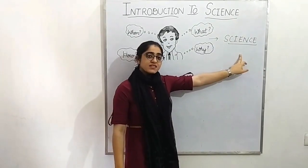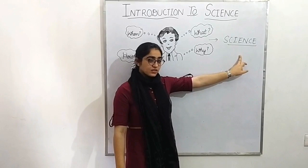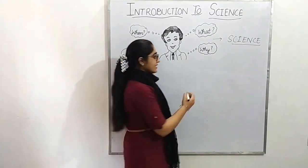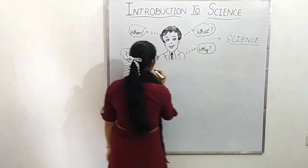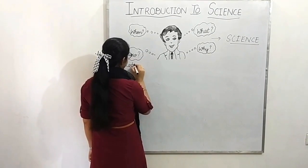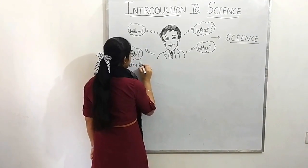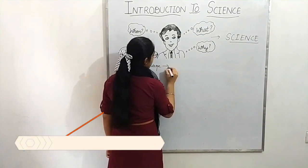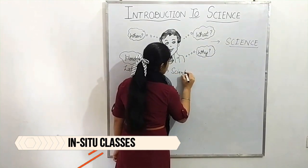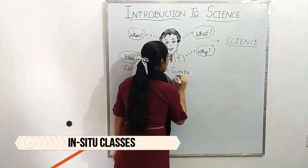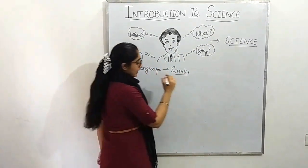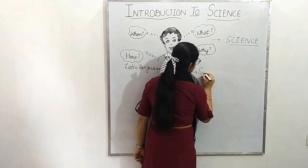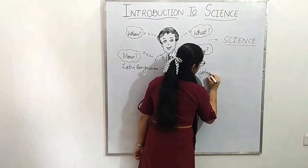And that word is science. Science has arisen from a Latin language word. That Latin word is 'scientia,' and from scientia the word science originated. And what is the meaning of scientia? Scientia means systematic knowledge.